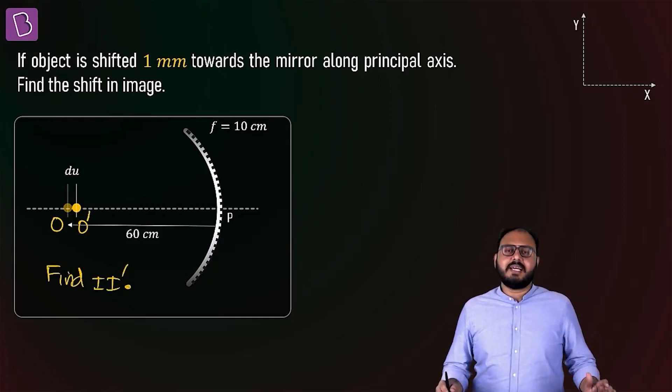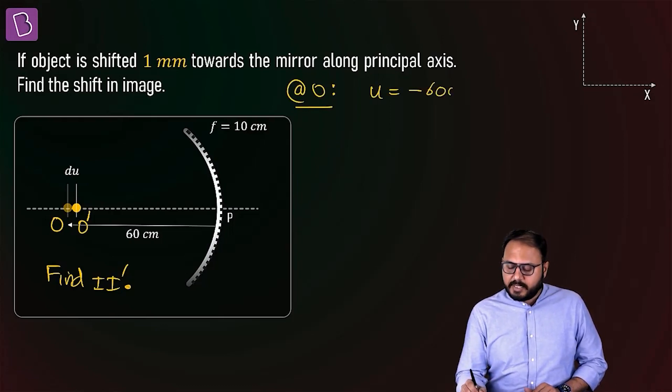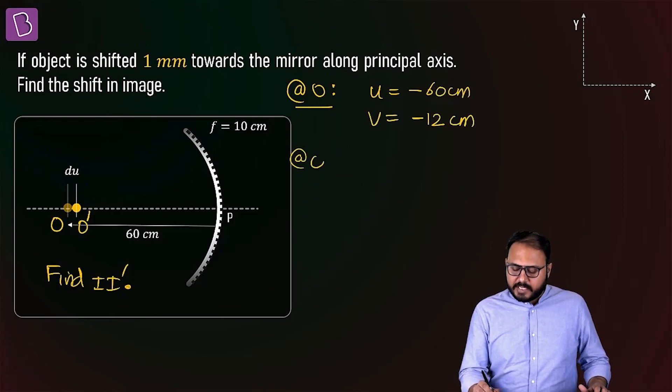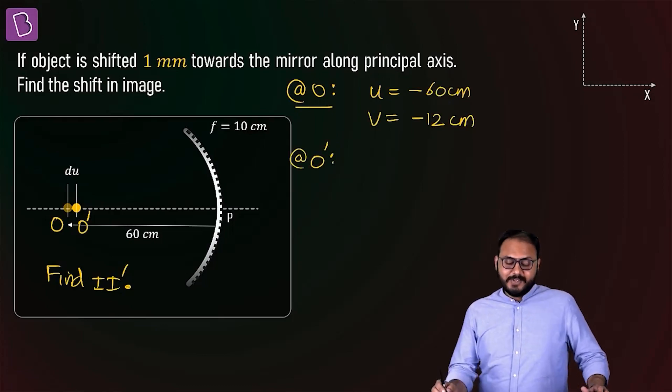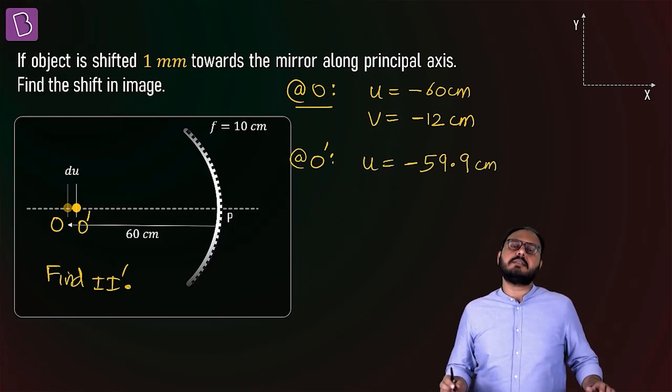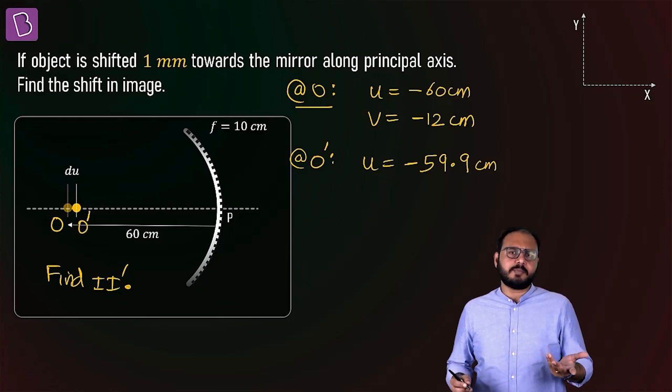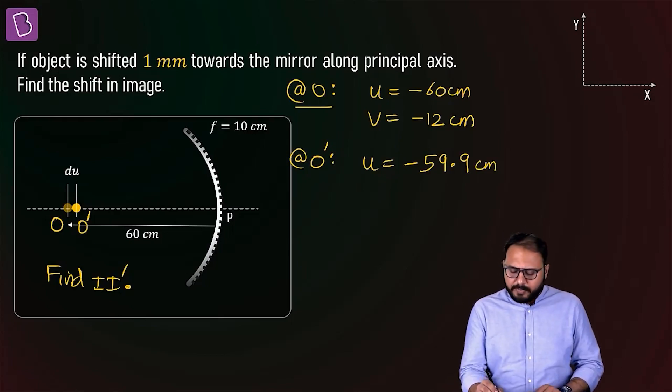At O, u equals minus 60 centimeters, which gives v equals minus 12 centimeters. At O', u is now minus 59.9 centimeters because 1mm is 0.1 centimeters. You still didn't get the problem? The problem is: one by v plus one by 59.9 equals one by minus 10. Who will do this calculation?